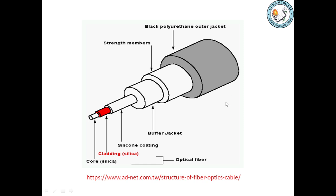The structure of the optical fiber: we have the core material, which is made up of silica. It is surrounded by cladding, which is surrounded by silicone coating, then surrounded by a buffer jacket, strength member, and black polyurethane outer jacket.